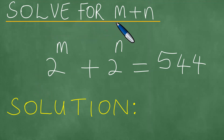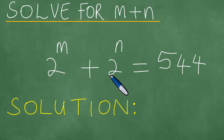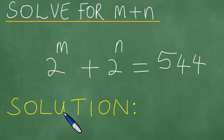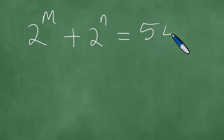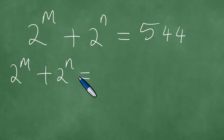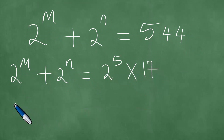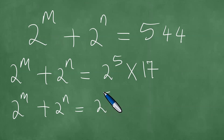We need to solve for M plus N, and we have been given 2 to the power M plus 2 to the power N equals 544. We present a solution to this exponential equation in a step-by-step fashion. We have 2 to the power M plus 2 to the power N equals 544, and this equals 2 to the power 5 times 17.